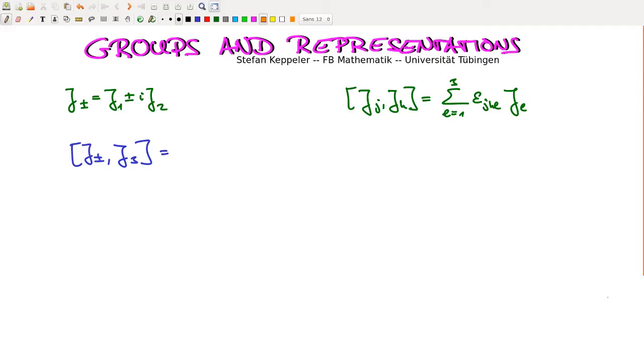For representation of the generators of SO3, we've defined this complex linear combination here, J plus minus, that's J1 plus minus i times J2.